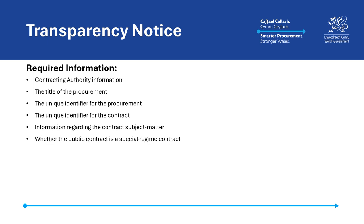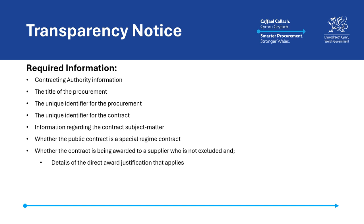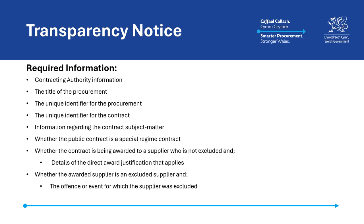Information relating to the subject matter of the contract; whether the contract is a special regime contract and, if so, whether it is a concession, a light touch, or a utilities contract; whether the contract is being awarded directly to a supplier that is not an excluded supplier because a direct award justification applies in accordance with section 41 of the Act, and the direct award justification in Schedule 5 of the Act which applies, as well as an explanation of why the contracting authority considers that it applies; or whether the contract is being awarded directly to a supplier that is an excluded supplier because the contracting authority considers that there is an overriding public interest in awarding the contract in accordance with section 41 of the Act, and the offence or other event as listed in Schedule 6 of the Act by which the supplier is an excluded supplier, as well as which of the listed grounds constituting an overriding public interest in section 41 of the Act applies, and an explanation of why the contracting authority considers that it applies in this case.